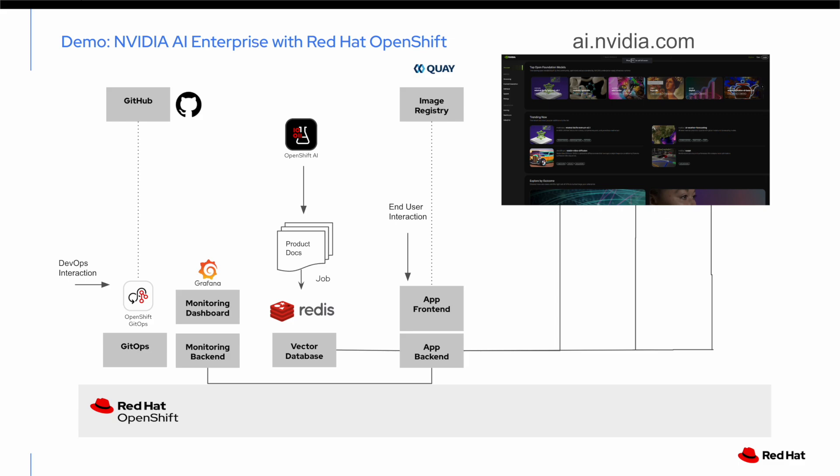For an LLM to generate a project proposal, we must augment our prompts with data from Red Hat product documentation. This data is retrieved from a vector database, so an important step is the document ingestion.